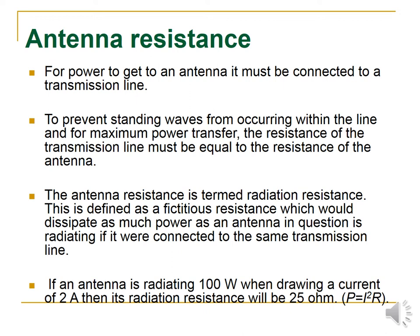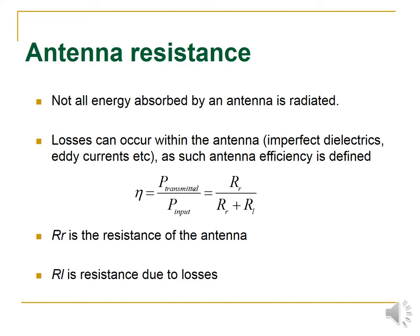Next is antenna resistance. In order to calculate the power given to an antenna, it must be connected across a transmission line. To prevent standing waves or to create maximum power transfer, the resistance of the transmission line must equal the resistance of the antenna. This antenna resistance is termed as radiation resistance — defined as the fictitious resistance which should dissipate as much power as the antenna is radiating when connected to the same transmission line. Losses can occur within the antenna due to imperfect dielectrics or eddy currents. Antenna efficiency is defined as eta = P_transmitted / P_input = R_R / (R_R + R_L), where R_R is the radiation resistance and R_L is the resistance due to losses.